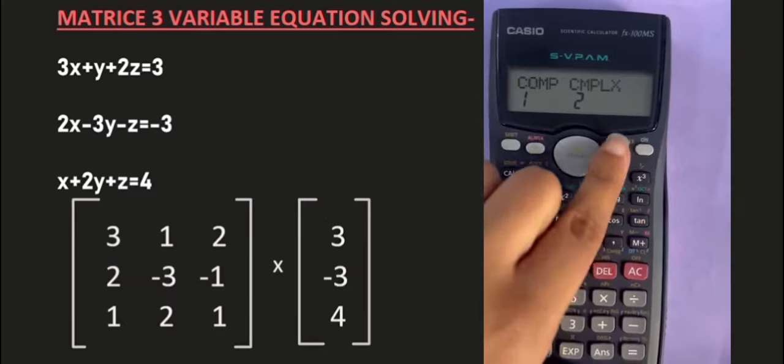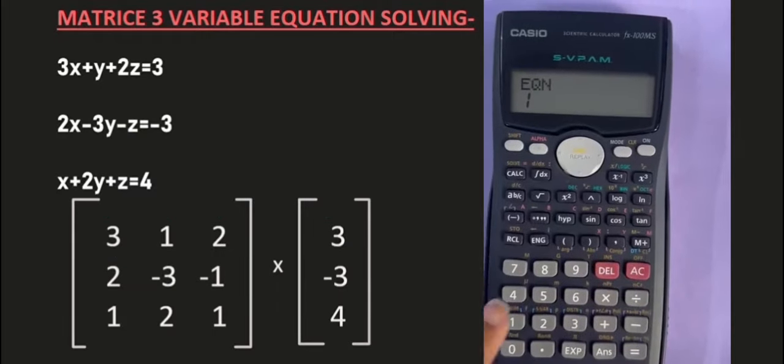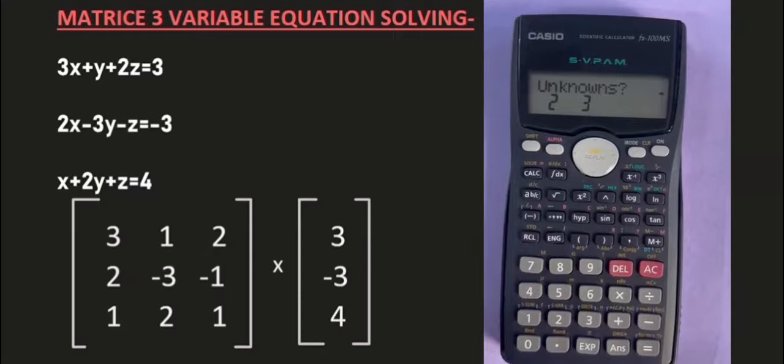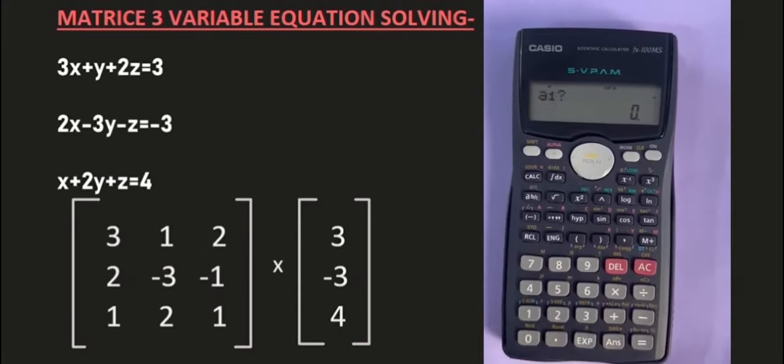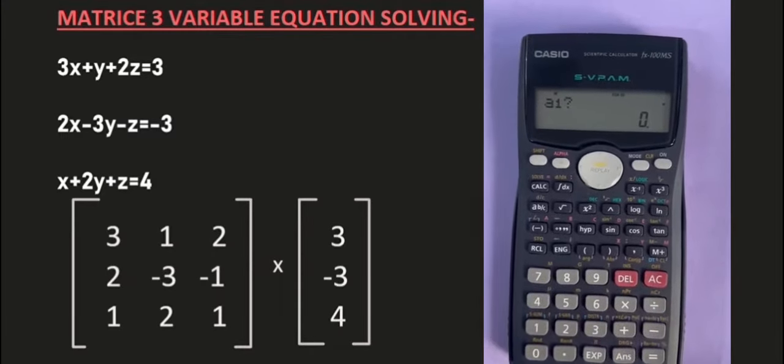Firstly we choose the mode and go to equations. I select the first option and here we have three unknown variables. Now we will add all the constants.